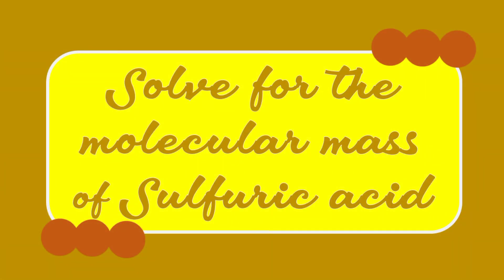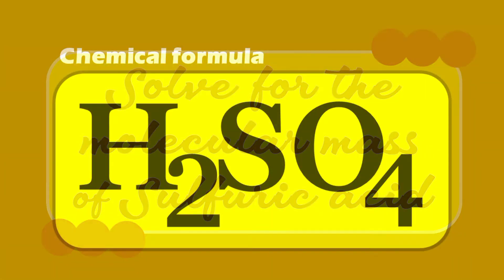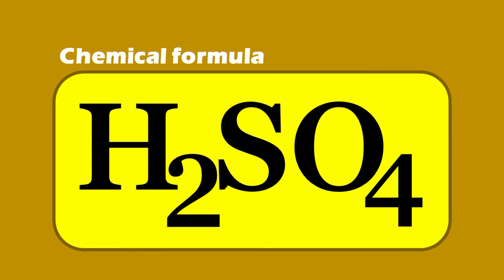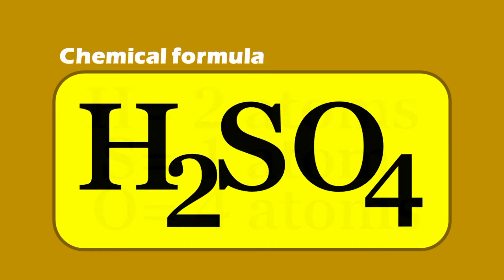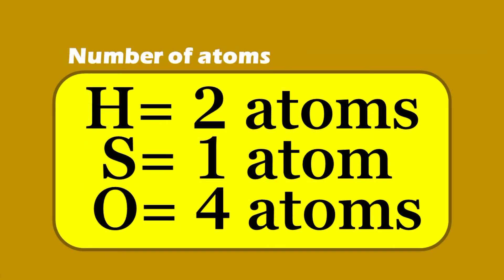Solve for the molecular mass of sulfuric acid. Sulfuric acid is represented by the chemical formula H2SO4. The elements involved are hydrogen, sulfur, and oxygen. The sulfuric acid consists of two hydrogen atoms, one sulfur atom, and four oxygen atoms.